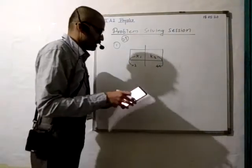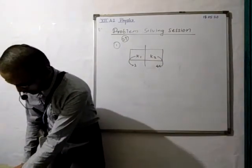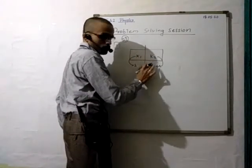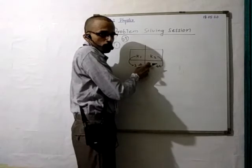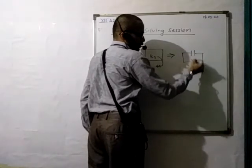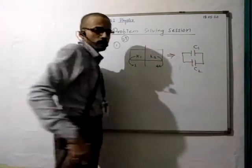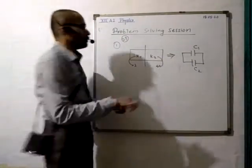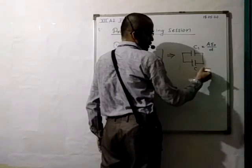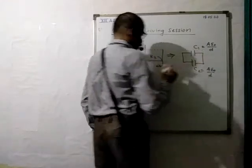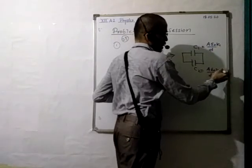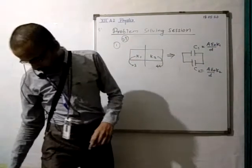To find the capacitance of the system — when k1 and k2 are given side by side like this, the capacitors are in parallel. So first find the equivalent connection. This gives C1 and C2. C1 = A·epsilon_naught·k1 / d, and C2 = A·epsilon_naught·k2 / d. Since the area is divided into two equal halves, A becomes A/2 and d remains the same.